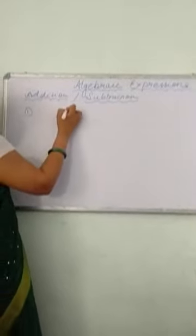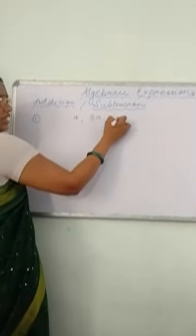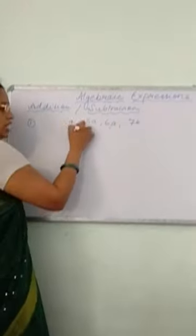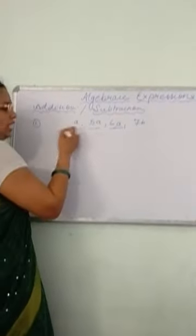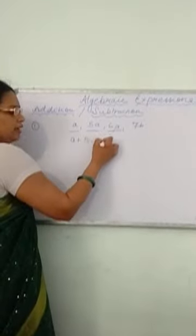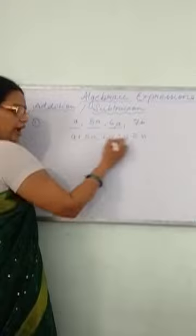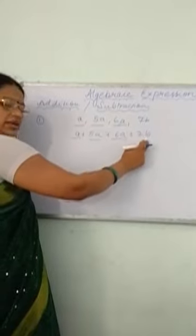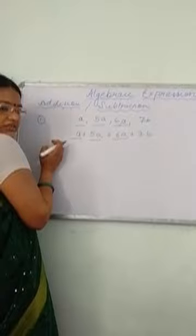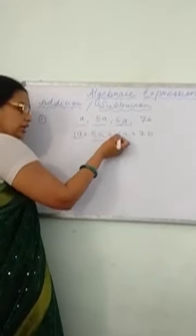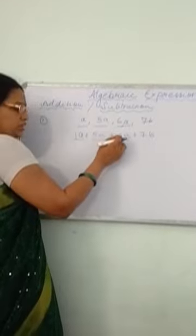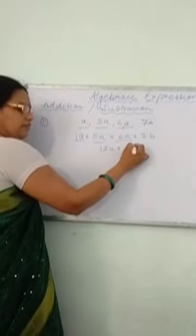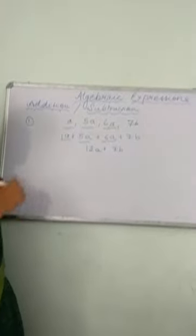For example, if I have to add A, 5A, 6A and 7B. So here A, 5A, 6A are like terms. So we will add A plus 5A plus 6A plus 7B. These three are like terms and 7B is an unlike term. So I will add these three terms by adding their numerical coefficients: 6 plus 5 is 11, and 11 plus 1 is 12A. And we will write 7B as it is — we will not add 7B in this.